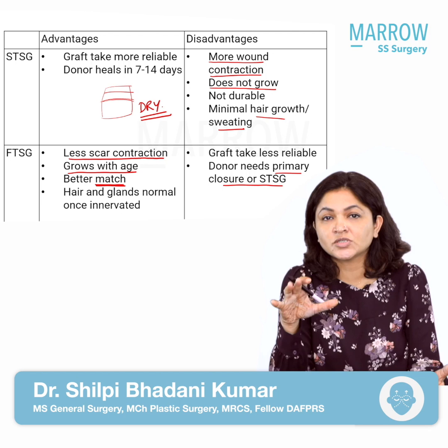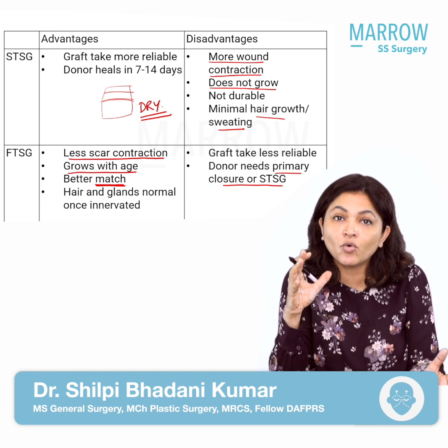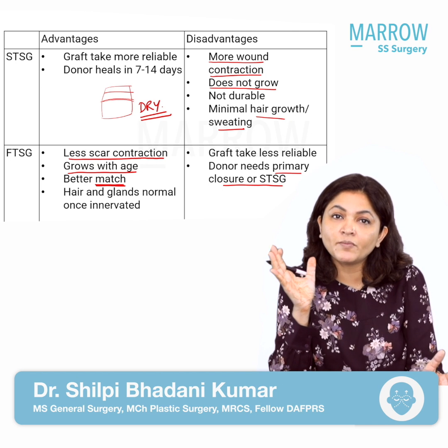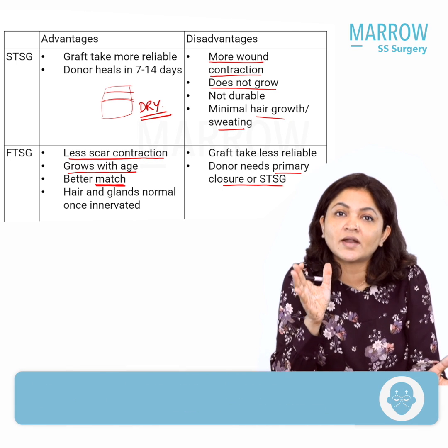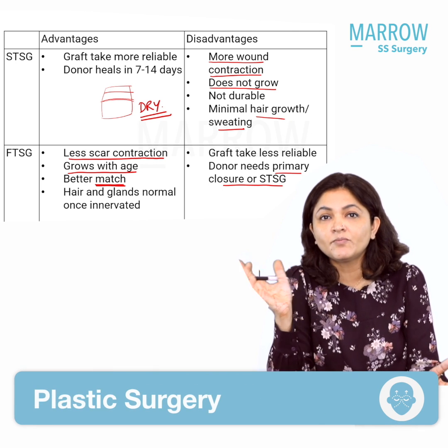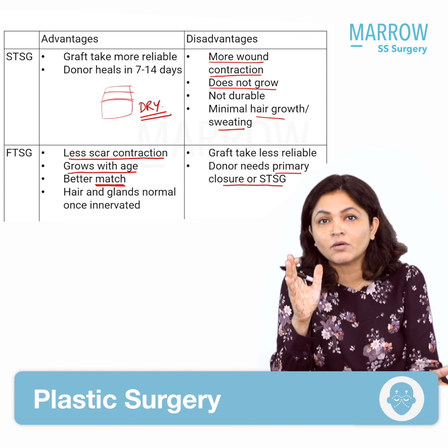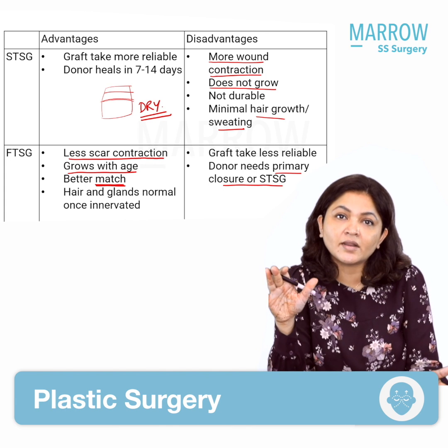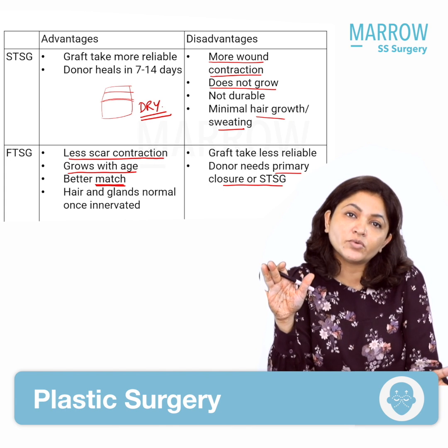If we land up in a situation where we need a full thickness skin graft and we cannot primarily close that donor area, we will borrow skin from a split thickness skin graft and cover that area of the donor.